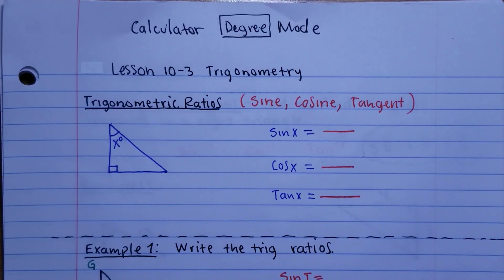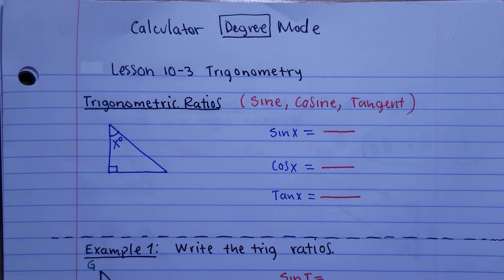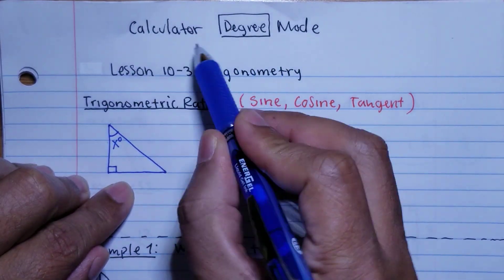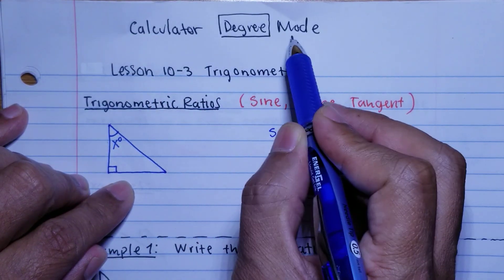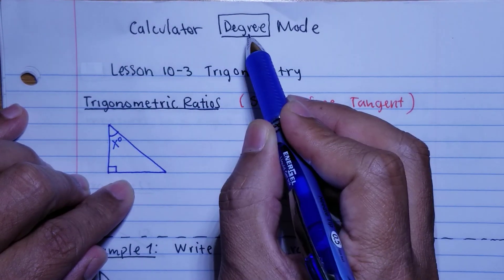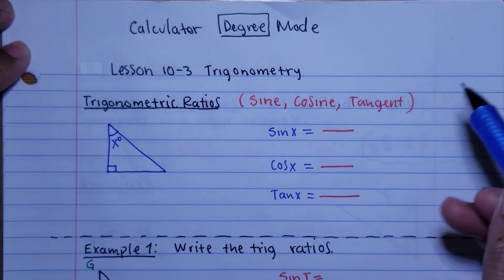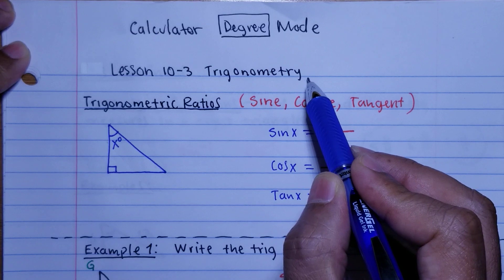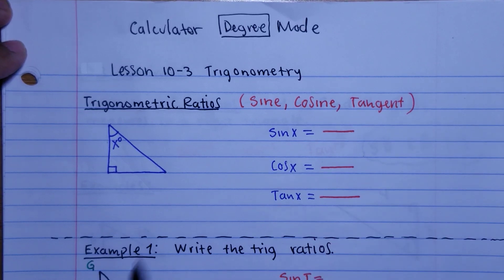Hi everyone, welcome back for another video lesson. Today we're going to go into more details about trigonometry and how to use it to help us find angle measures and also the sides of a right triangle. Let's quickly review — your calculator has to be in degree mode, so don't forget. When you use your phone calculator, check that it is in degree mode so that you don't get incorrect answers. This is lesson 10-3: Trigonometry. Go ahead and pause the video to copy this down.